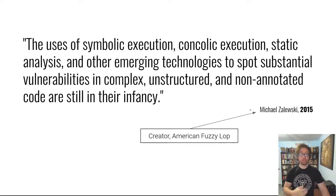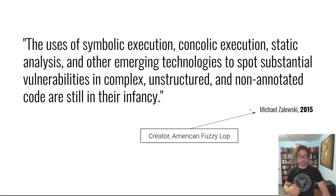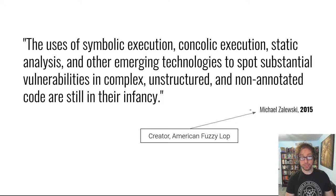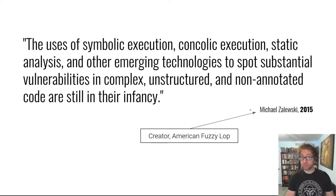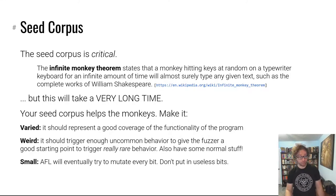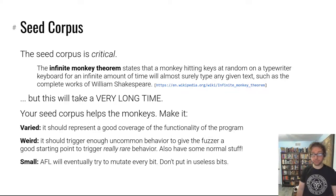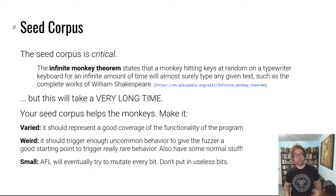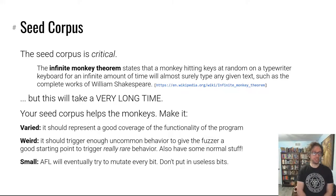From here we're going to talk about American Fuzzy Lop — AFL. It's a specific implementation of coverage-guided mutational fuzzing. I don't know if it was the first implementation, but it was definitely the first widely and radically famous implementation of it, and it kind of changed the world of program analysis forever. First, let's talk about the seed corpus you would pass to AFL.